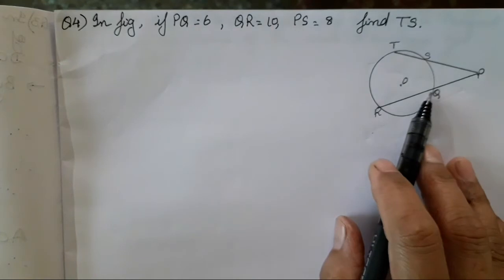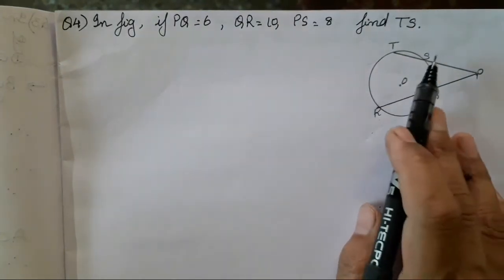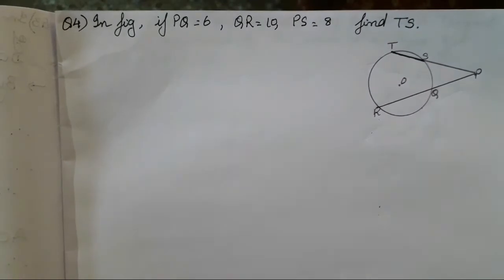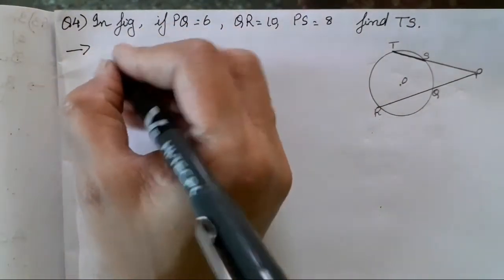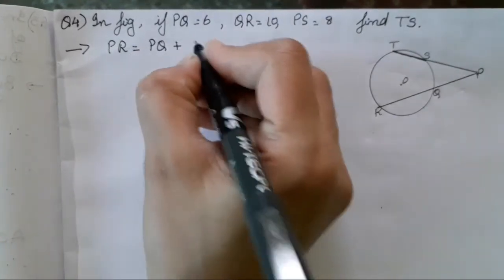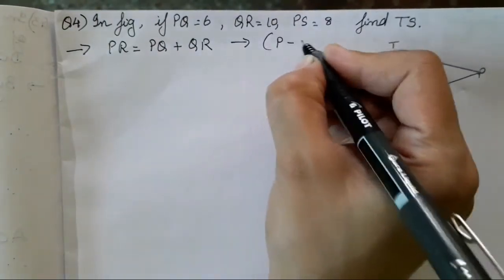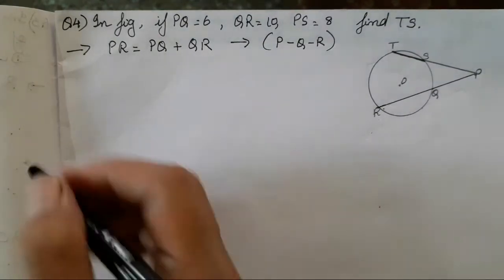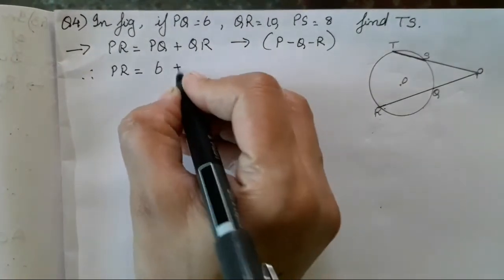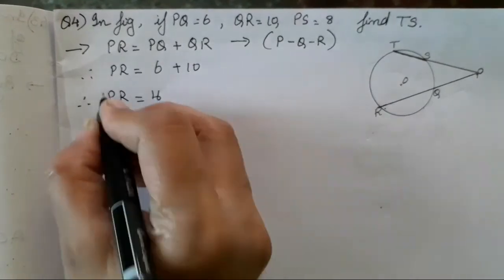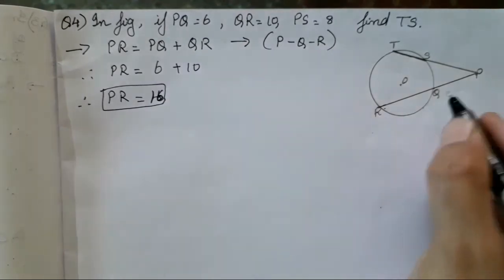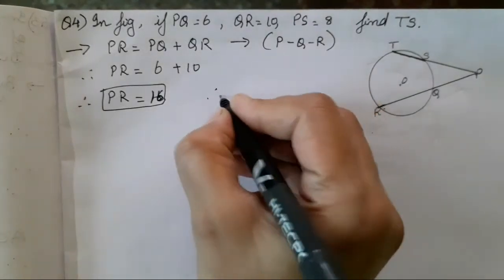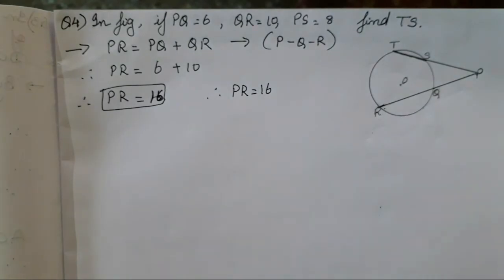In the figure, PQ = 6, QR = 10, PS = 8; find TS. PR = PQ + QR = 6 + 10 = 16. Chord ST and chord QR, when extended, intersect at point P outside the circle. So we will use the theorem of external division of chords, not internal division.